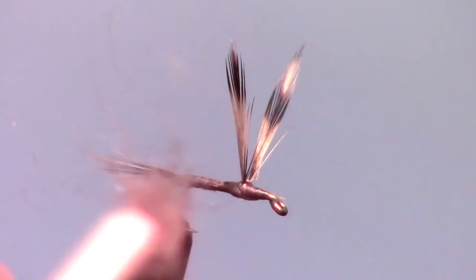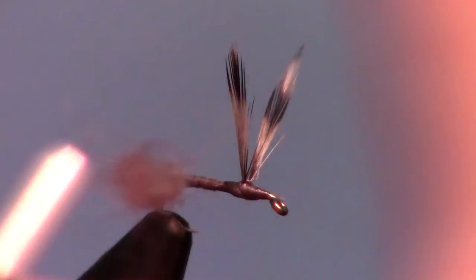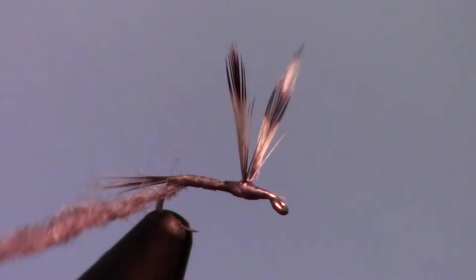Now dub in some grey fine dry fly dubbing and make a small taper in the fly, up to just behind the wings.